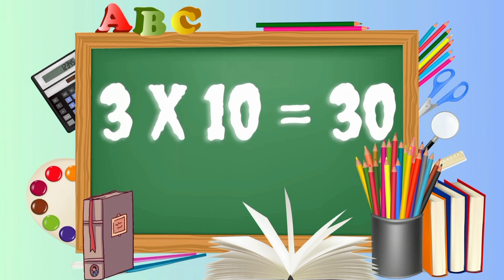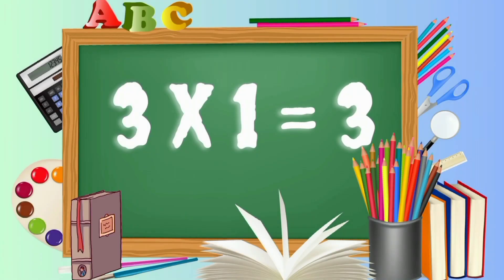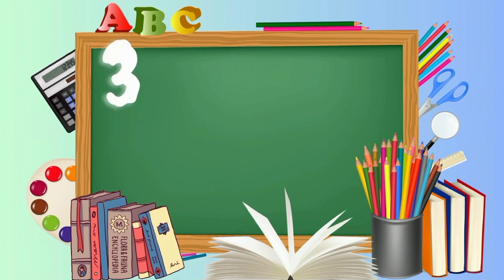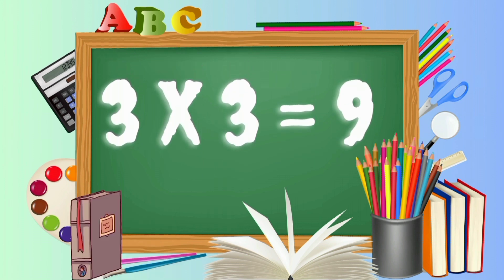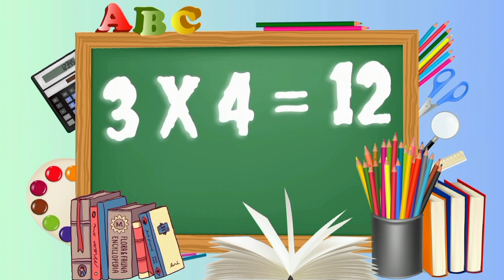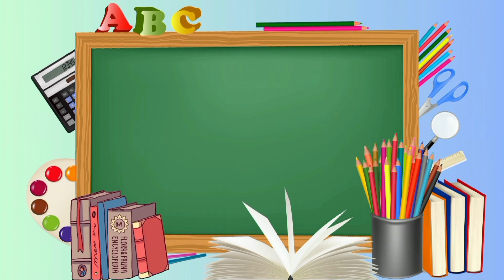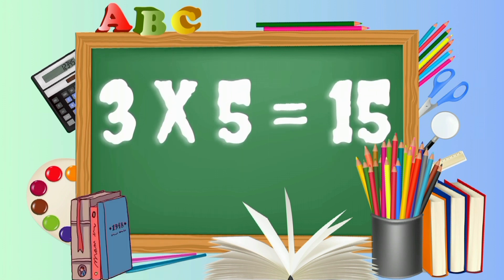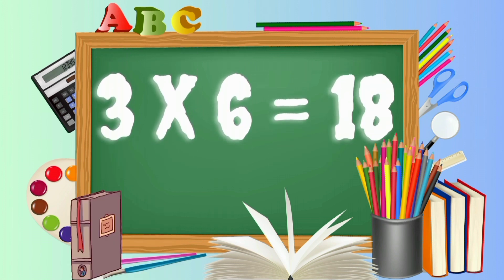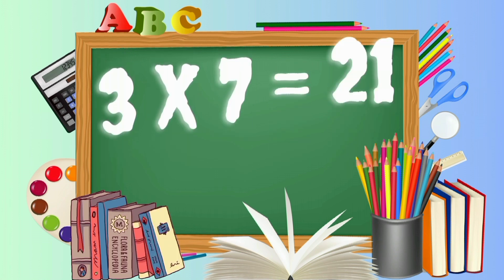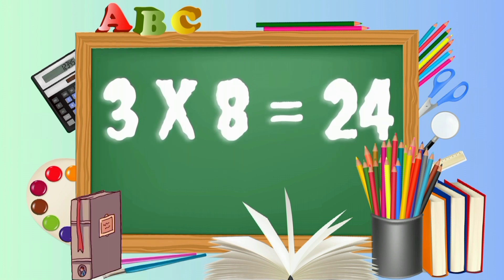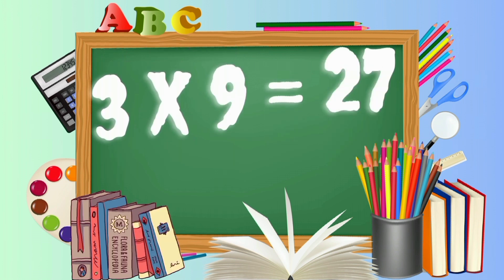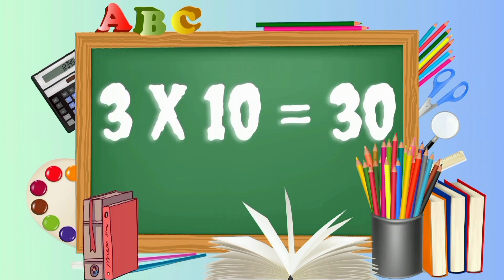Three ten's are thirty. 3 ones are 3. 3 twos are 6. 3 threes are 9. 3 fours are 12. 3 fives are 15. 3 sixes are 18. 3 sevens are 21. 3 eights are 24. 3 nines are 27. Three times ten is thirty.